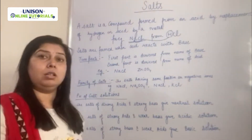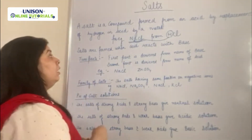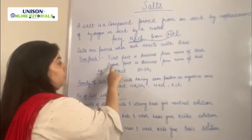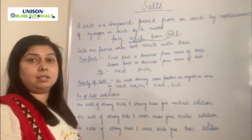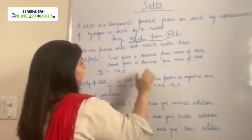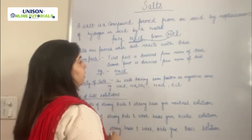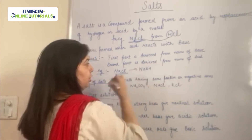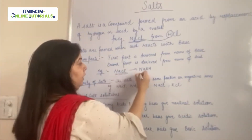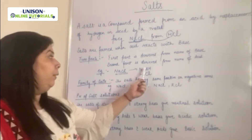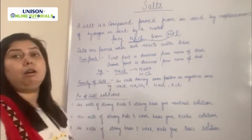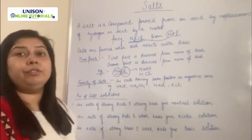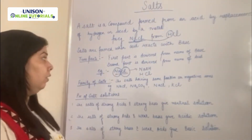This is very important: salt has two parts. Since salt is made up of an acid and a base, the first part is derived from the name of the base and the second part is derived from the name of the acid. For example, NaCl — the first part is derived from NaOH (base) and the second part from HCl (acid).